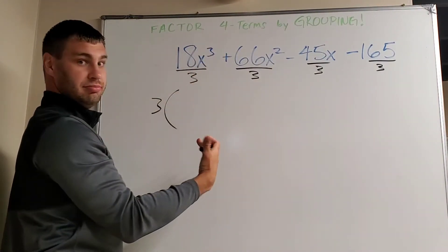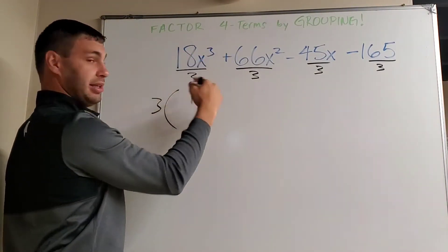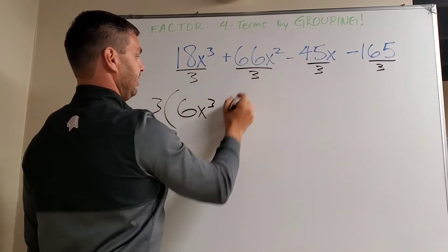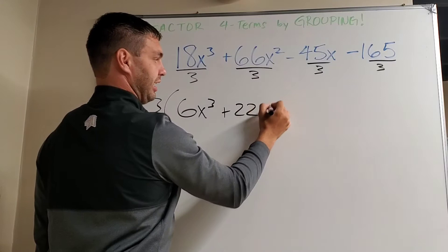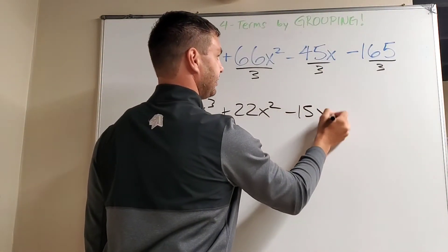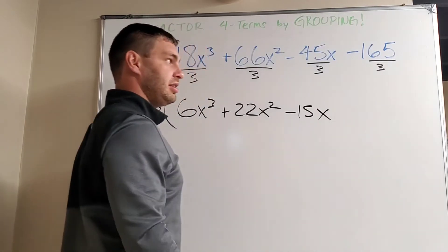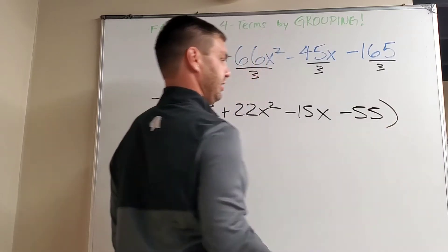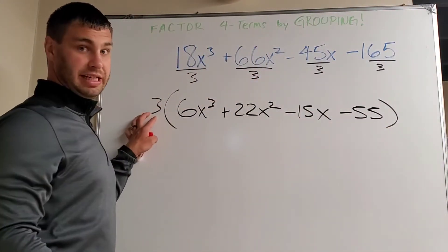and then write what that division yields, right? 18 divided by 3, for example, is 6, so 6x to the third, and this would be plus 22x squared. Negative 45 divided by 3 is negative 15x, and then negative 165 divided by 3 is negative 55. And then close your parentheses so that 3 is on the outside.